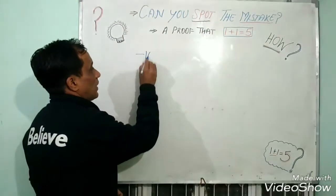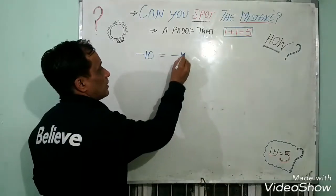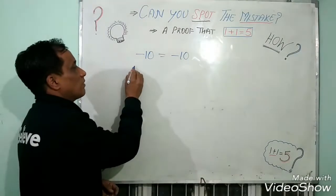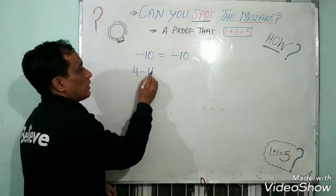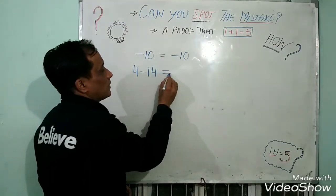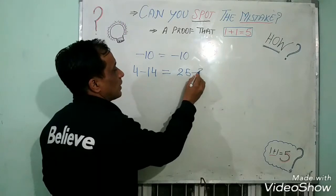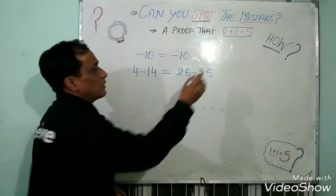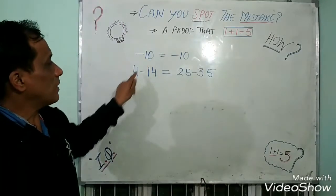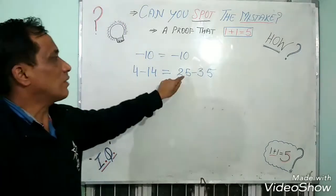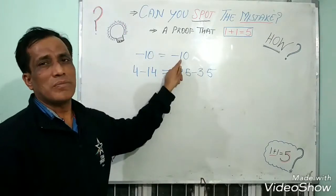As you know, minus 10 is equal to minus 10. Minus 10 can be written as 4 minus 14, or this minus 10 can be written as 25 minus 35. Just algebra. 4 minus 14 is minus 10, and 25 minus 35 is minus 10.